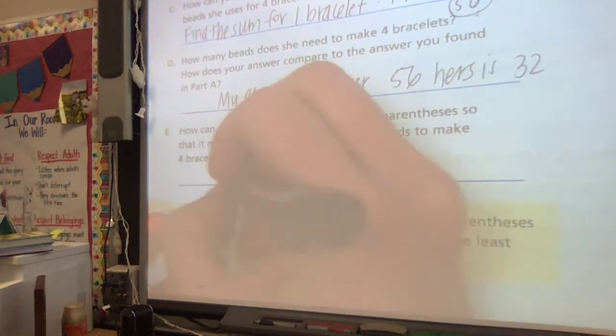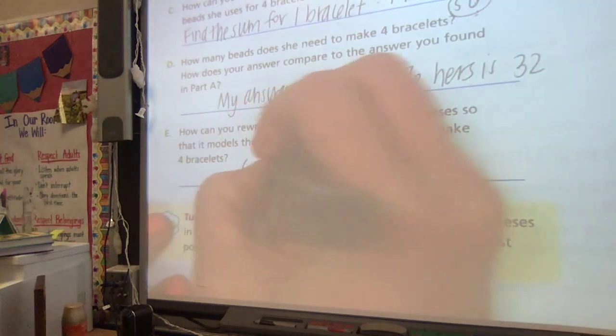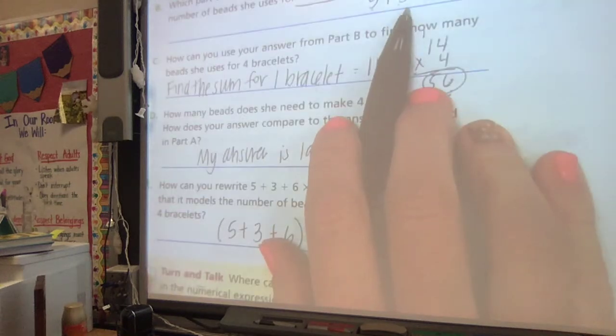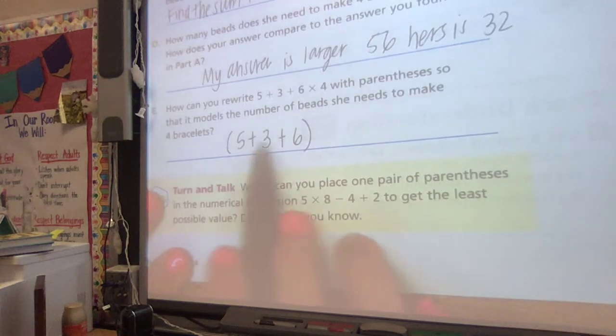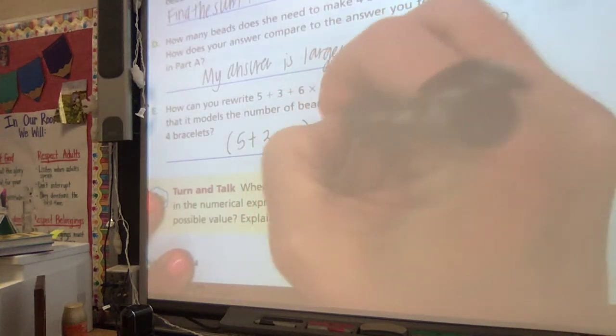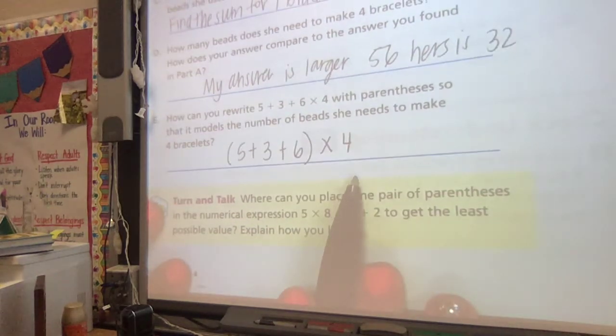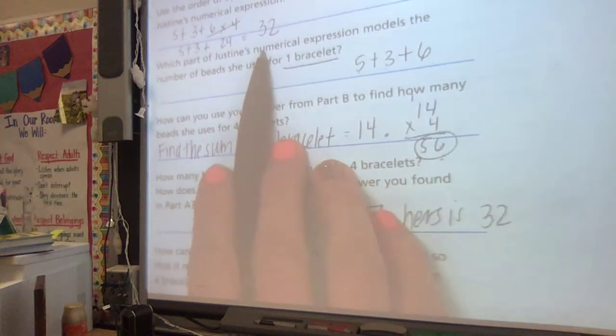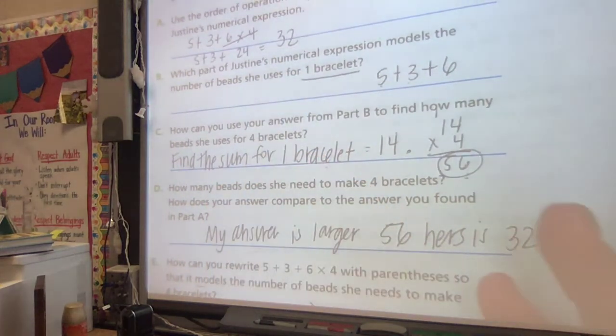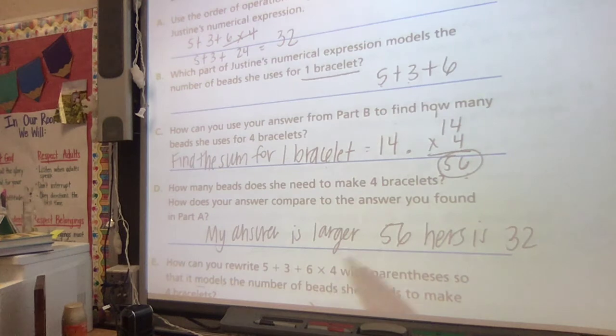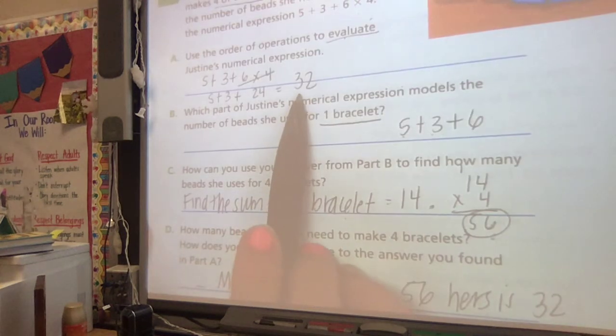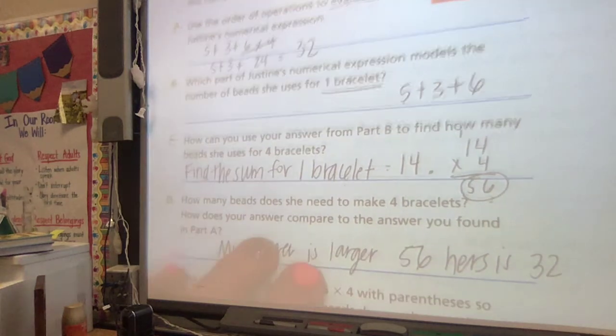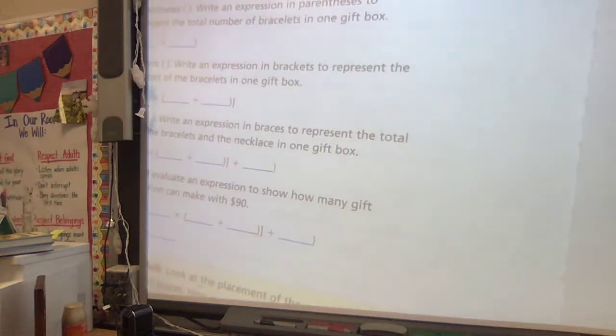We need to have our parentheses around what we found, just like we did. We figured out one bracelet, then once we figure out one, we can multiply that times 4. Do you see how different our answers will be if we don't follow the order of operations correctly or if we don't have it written out correctly? Because 32 is a lot less than 56.